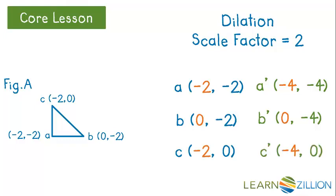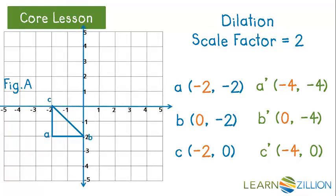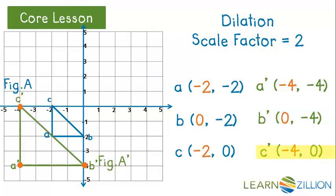Let's take a look at this on the graph. Plotting each point: A prime is (−4, −4), B prime is (0, −4), and C prime is (−4, 0). We can see the image is the same shape but a different size than the pre-image, so we can say it is similar to, but not congruent to, its pre-image.